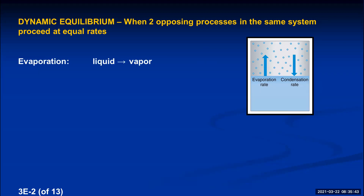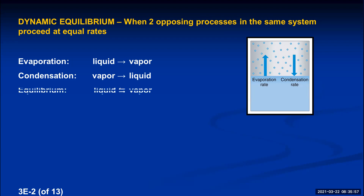The two opposing processes are evaporation, where liquid turns into vapor, and condensation, where vapor turns into liquid. To indicate dynamic equilibrium, we write the two states — liquid and vapor — with a double-headed arrow between them. That double-headed arrow signifies chemically that these two processes are occurring at equal rates.